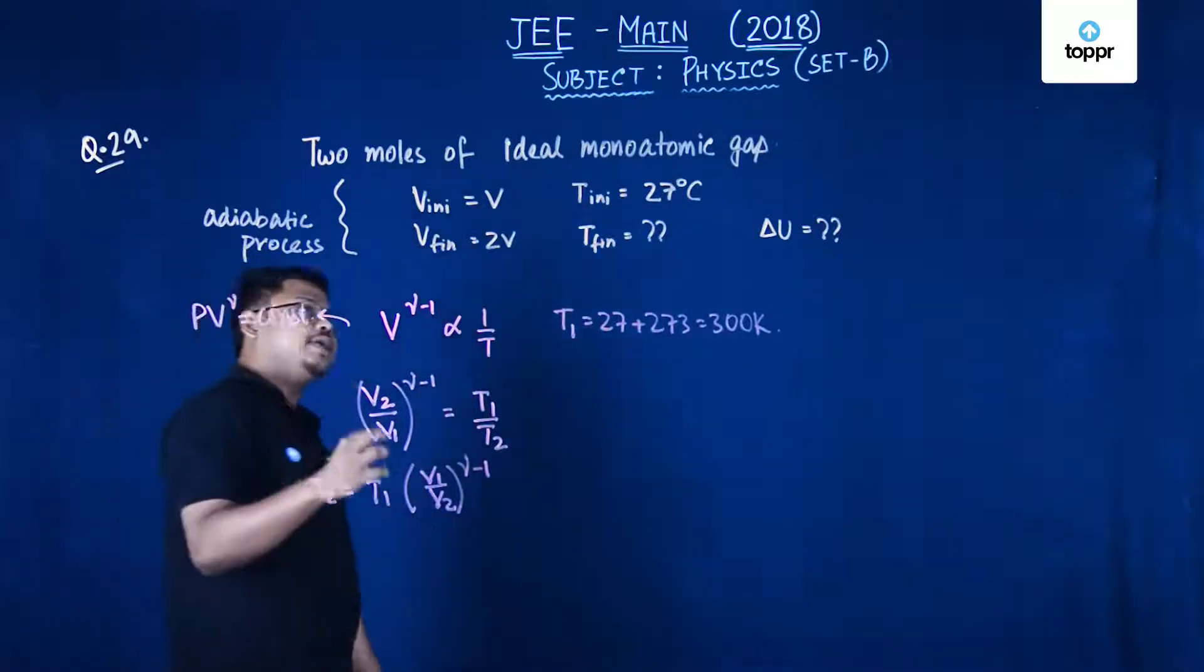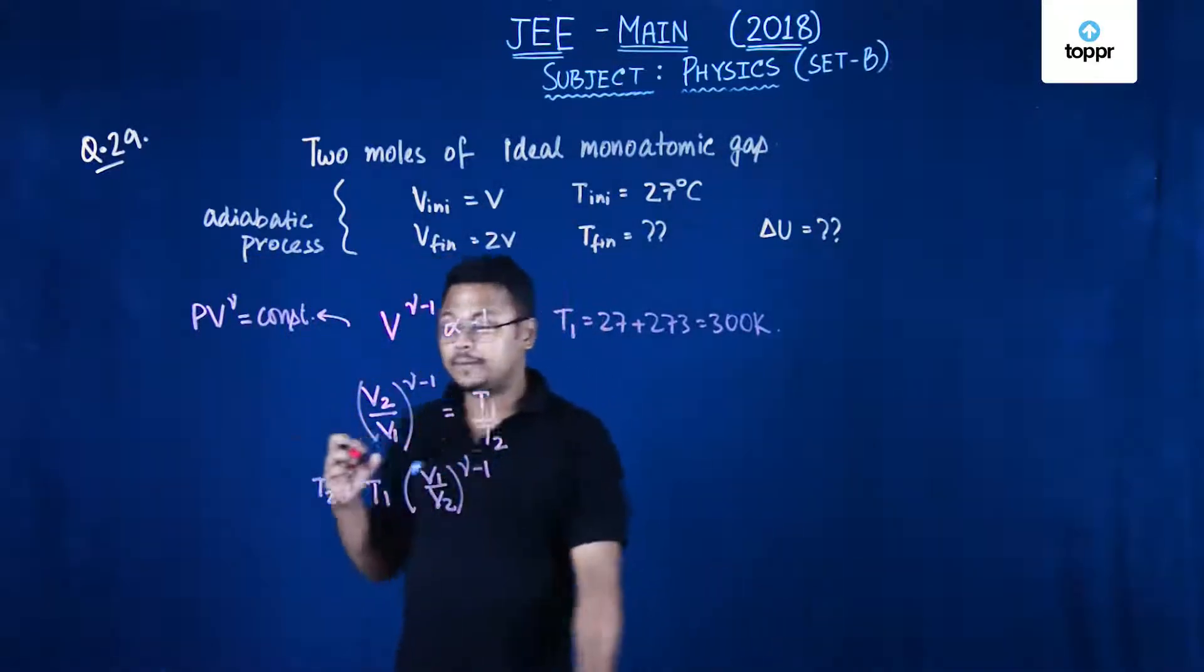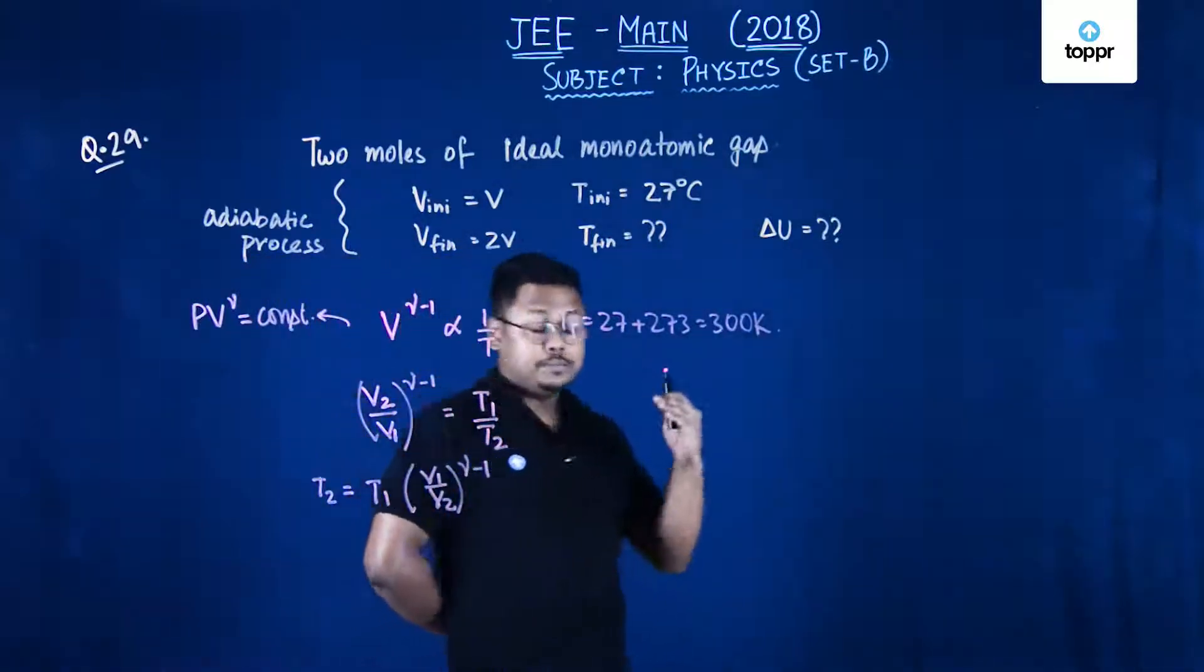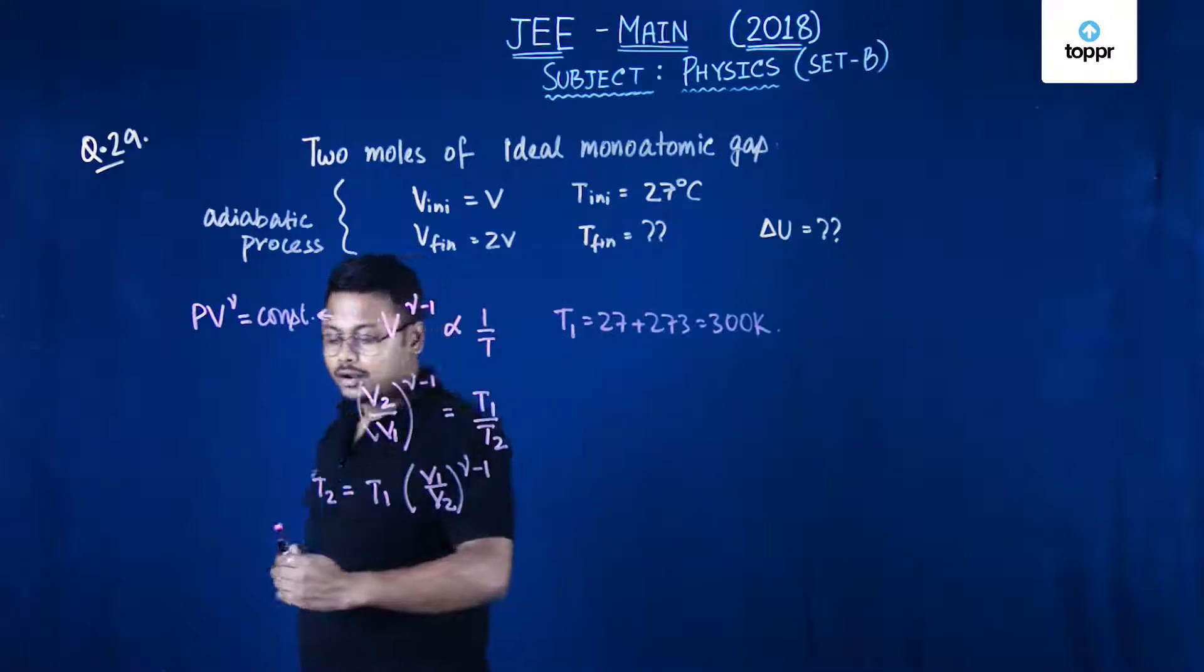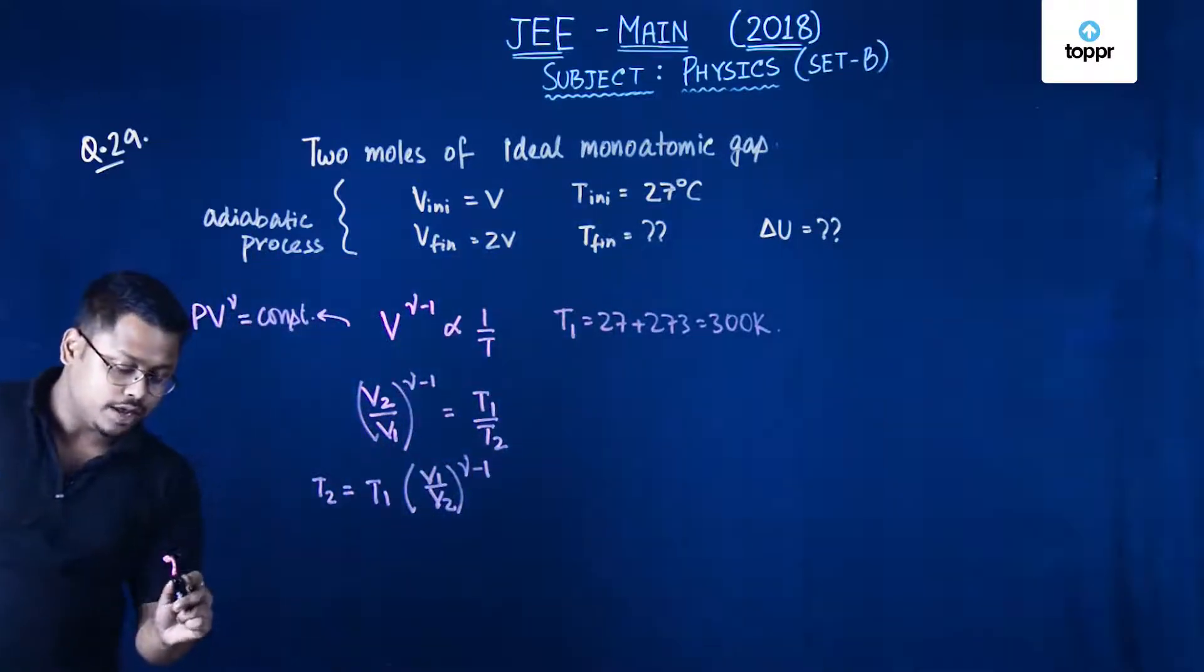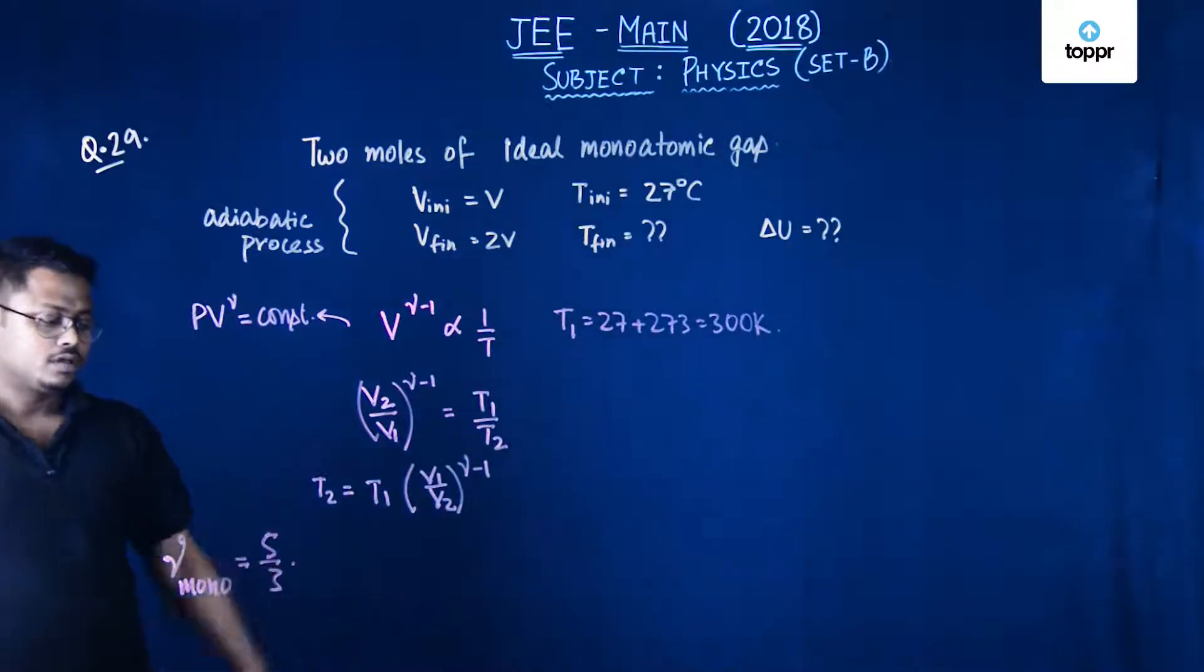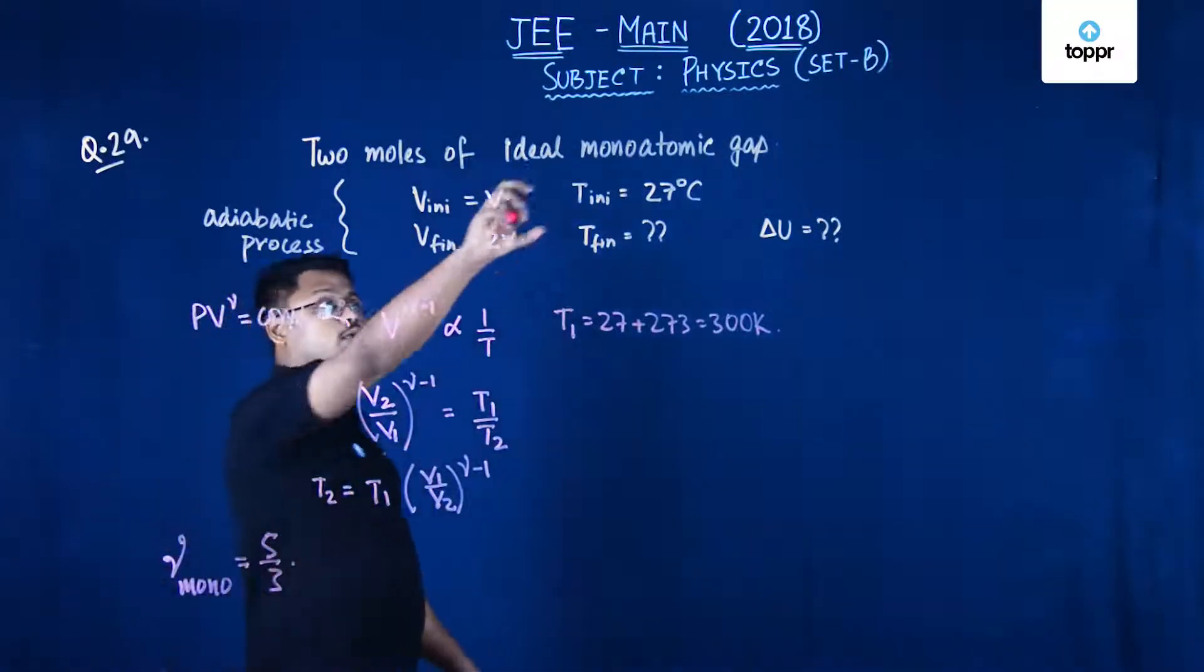Now for monoatomic gas what will be the value of gamma? The value of gamma will be CP by CV, that is 5 upon 2R divided by 3 by 2R. So gamma, value of gamma for monoatomic will be equal to 5 upon 3, as it is a monoatomic ideal gas.